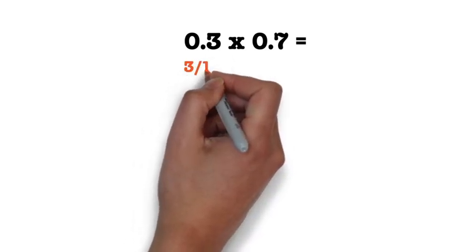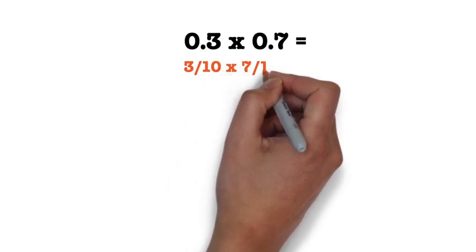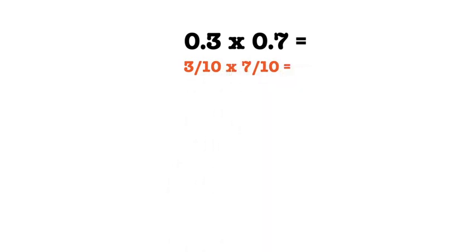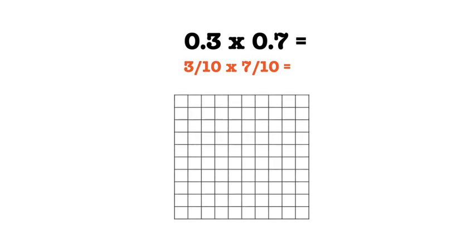3 tenths is equivalent to the fraction 3 tenths, and 7 tenths is equivalent to the fraction 7 tenths. When modeling multiplication of decimals, we use a grid. For this problem, we will use a 10 by 10 grid because both denominators are 10.